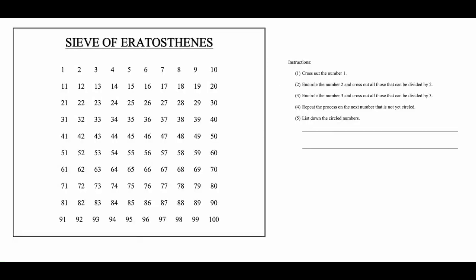The sieve of Eratosthenes is a method used to filter out the prime numbers from a set of numbers arranged from 1 to 100, for instance.